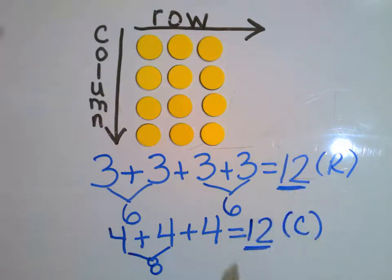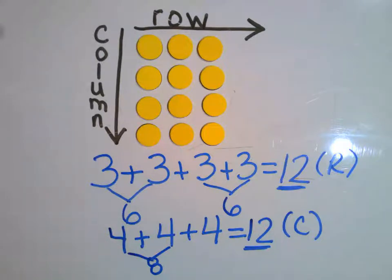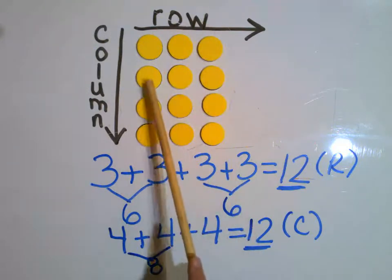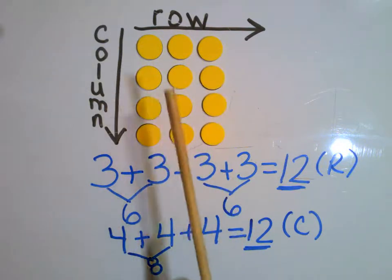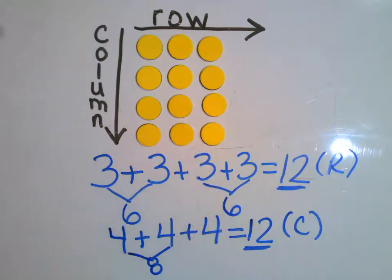Notice again, my sums are going to remain the same. Why? Because I'm not adding any more to this array, I'm not taking any away. I'm just adding it in a different way depending on the direction, whether it be a row or a column. For all my non-believers, let's count each one by one to double check and make sure we have 12 in our array: one, two, three, four, five, six, seven, eight, nine, 10, 11, 12. So now we have 12 in this array.